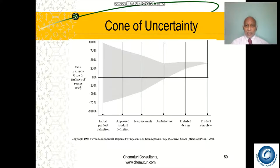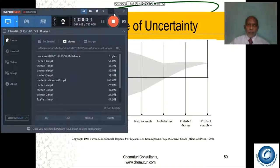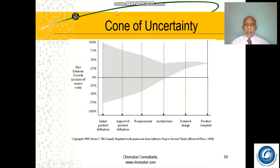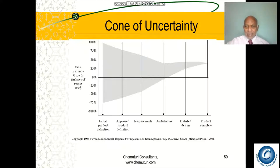The Cone of Uncertainty, depicted in Steve McConnell's book 'Software Estimation,' illustrates that at the beginning — the initial stage — uncertainty is high. As we progress through the phases and approach the end, uncertainty decreases. So we must recognize that estimation always carries some uncertainty.